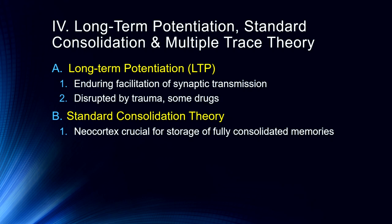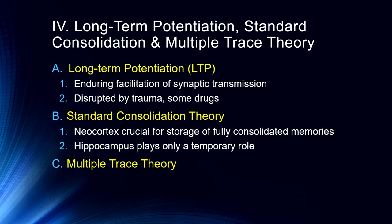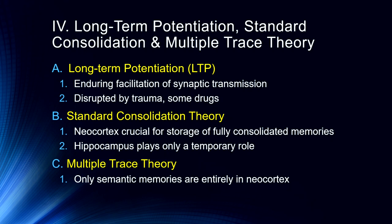Our studies demonstrated very dense anterograde amnesia caused by those drugs by disrupting LTP, providing evidence that LTP is part of the cellular process involved in creating long-term memories. Standard consolidation theory holds that the neocortex is crucial for storage of fully consolidated memories, and anything fully consolidated does not require the hippocampus. I don't buy this theory — particularly given evidence from the previous lecture showing the hippocampus is involved in accurate retrieval of the context of memories. Multiple trace theory, which I prefer, holds that only semantic memories are entirely in the neocortex.